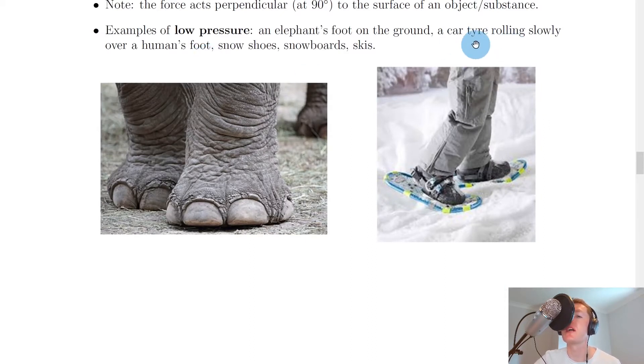Another example might be a car tyre rolling slowly over a human's foot. And you would find that the human's foot probably wouldn't be damaged by this single tyre rolling over the foot, because the force due to the car on the ground is due to the car's weight, and the weight of the car will be spread over the four tyres. And tyres typically have a large surface area, which means that there will be a small pressure exerted on the human's foot, therefore not causing much damage.